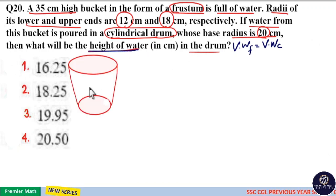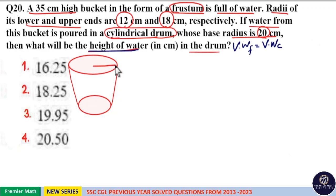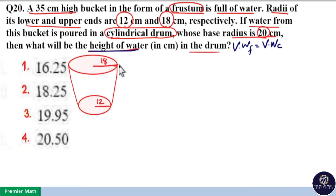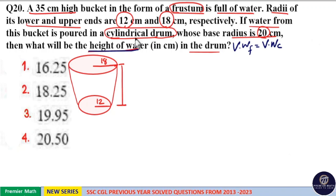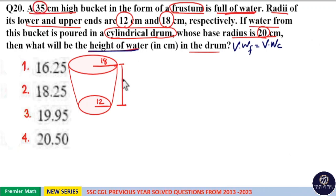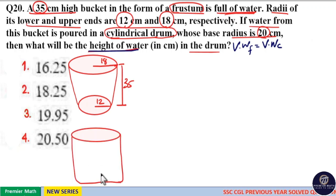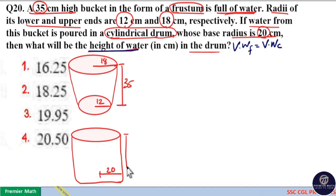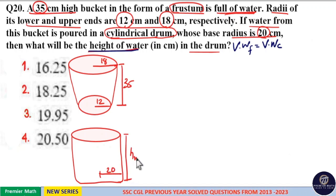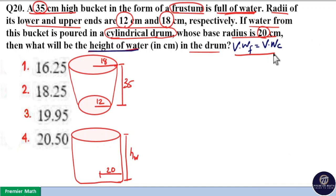This is the frustum. The upper end radius R is equal to 18 cm, the lower end radius r is equal to 12 cm, and the height of water in the frustum is the same as the height of the frustum because it is full of water — so height h is equal to 35 cm. For the cylinder, the base radius is 20 cm, and we find the height of water by equating the volumes.